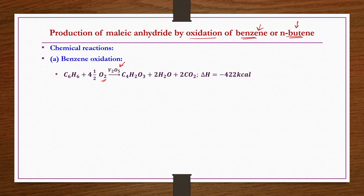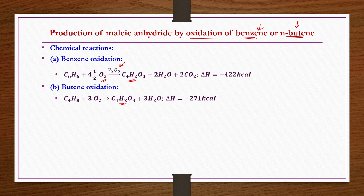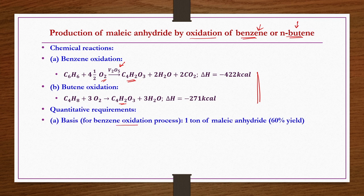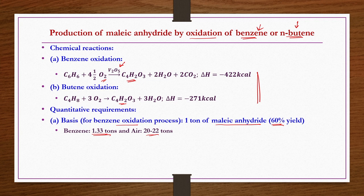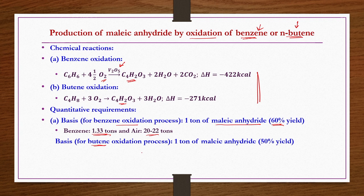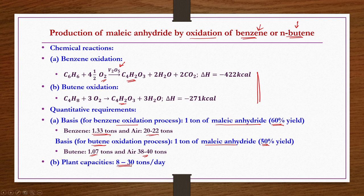Chemical reactions: benzene reacts with oxygen in the presence of V₂O₅ catalyst to produce maleic anhydride, water vapor, and carbon dioxide. Butene oxidation also yields maleic anhydride and water vapor. Both reactions are highly exothermic. Quantitative requirements — benzene oxidation: to produce 1 ton of maleic anhydride at 60% yield, 1.33 tons of benzene and 22 tons of air are required. Butene oxidation: to produce 1 ton at 50% yield, 1.07 tons of butene and 38–40 tons of air are required. Plant capacity is 8–30 tons per day.